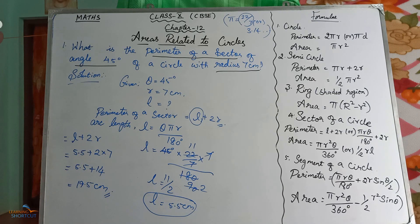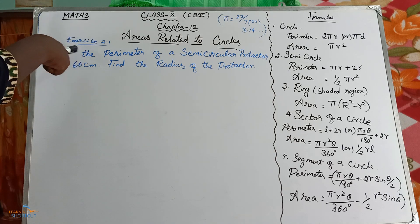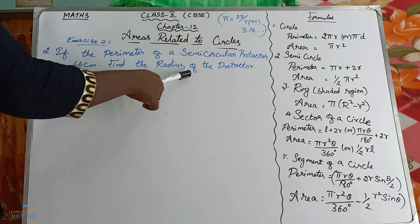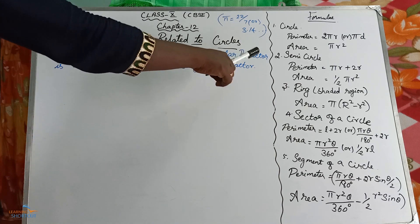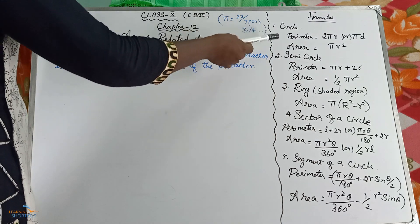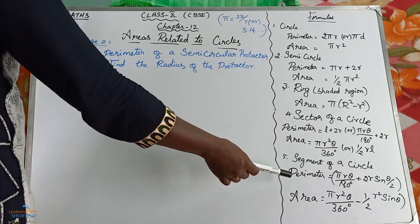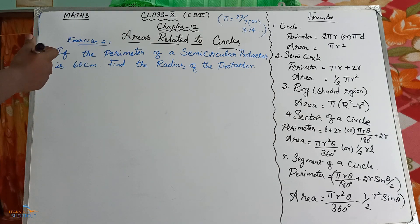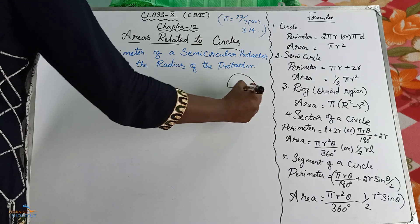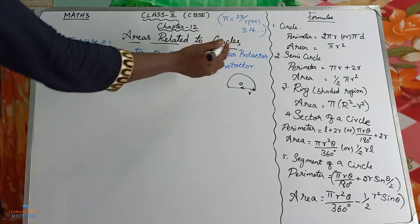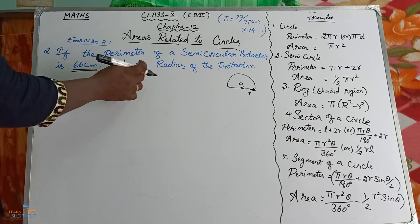In the second problem, the question is: if the perimeter of a semicircular protractor is 66 cm, find the radius of the protractor. Here some formulas are written for circle, semicircle, ring, sector of a circle, and segment of a circle. The shape of the protractor is semicircular — you have a center point O and radius R. They have given the perimeter of the semicircular protractor as 66 cm, and you need to find the radius.